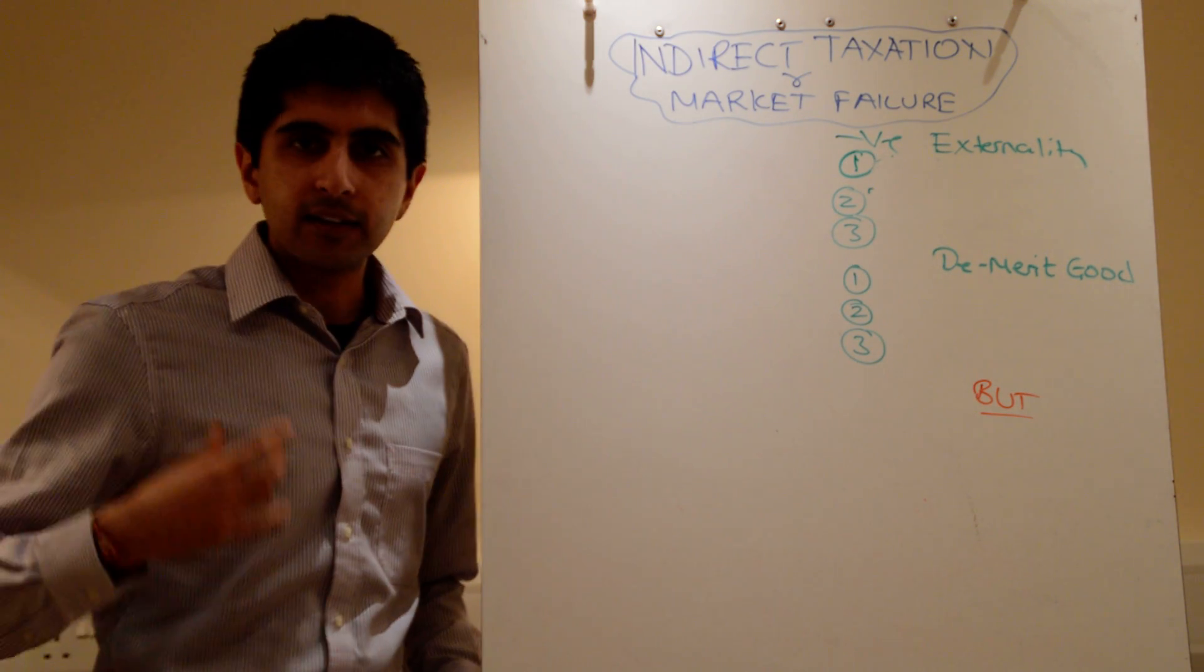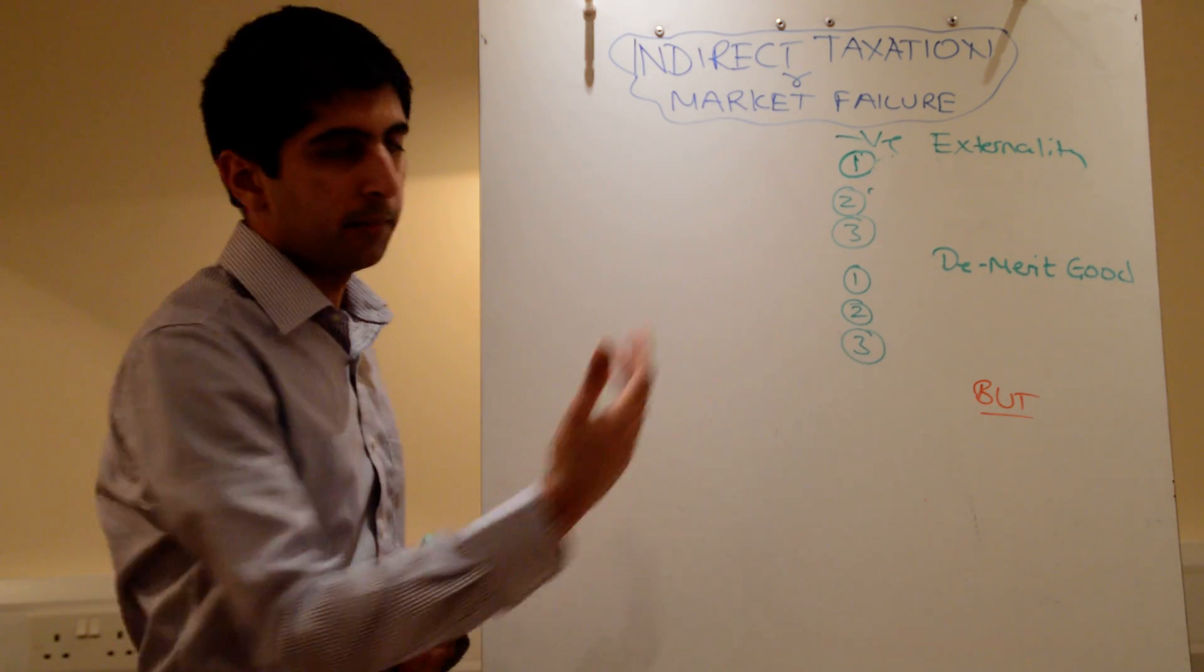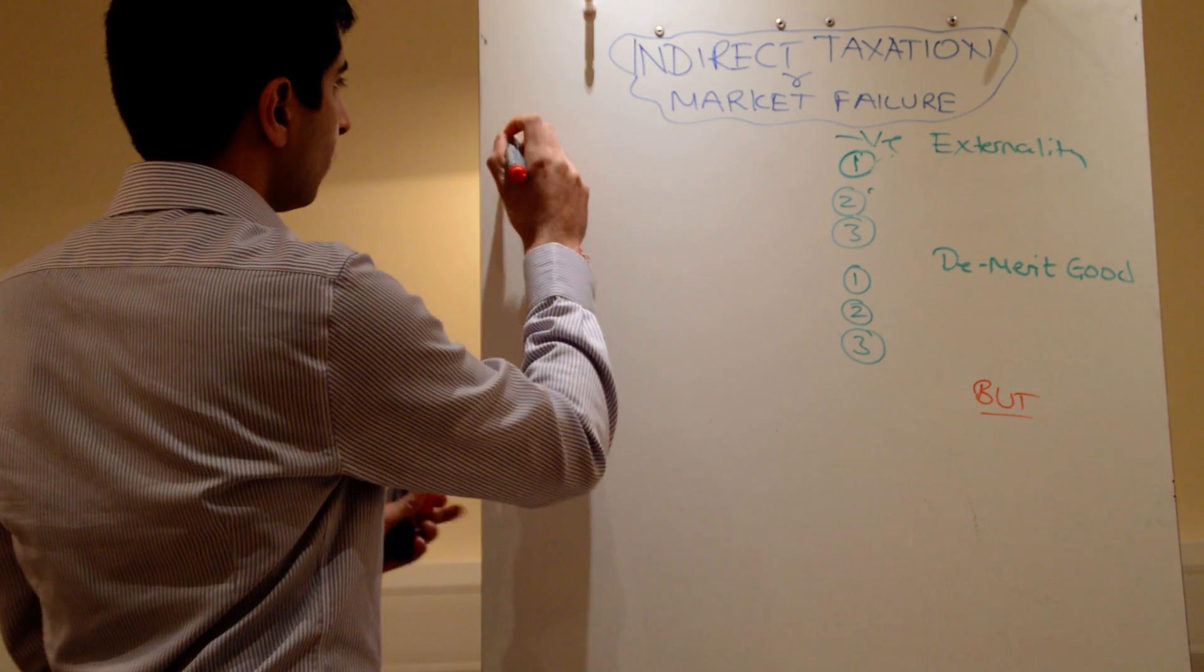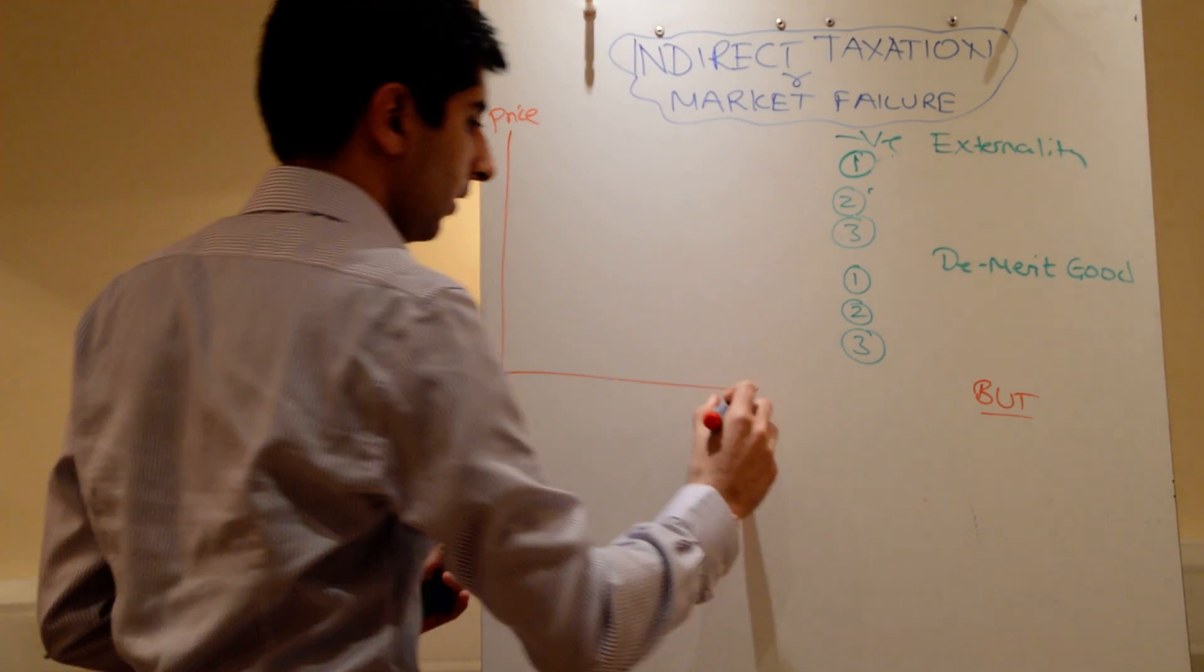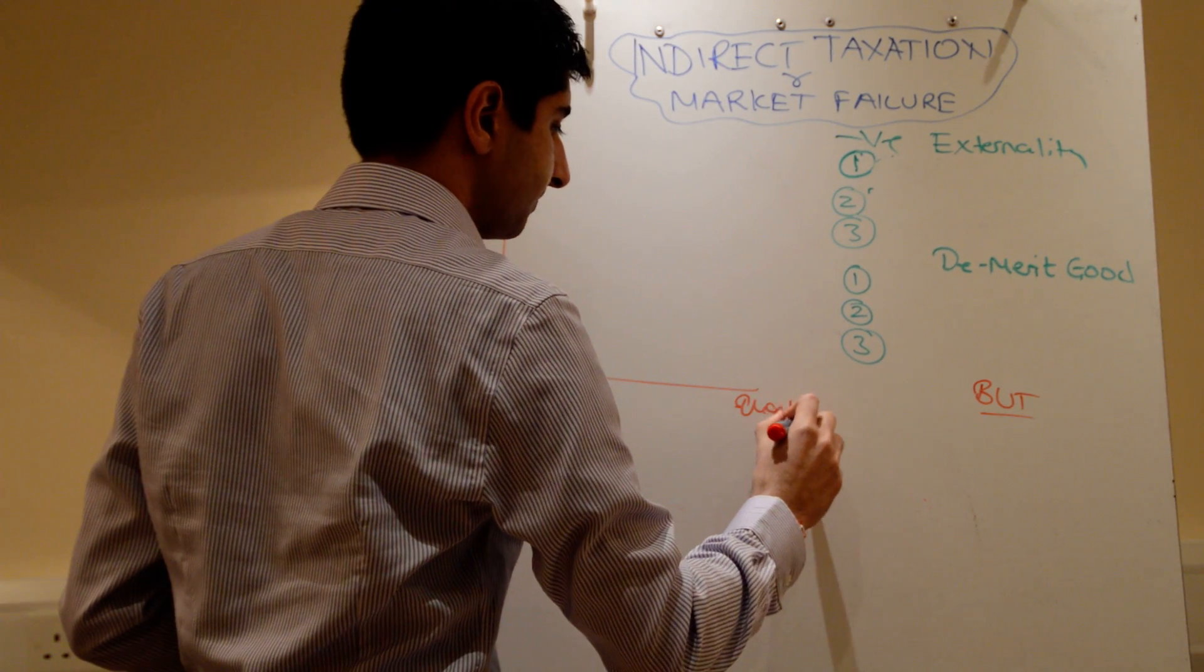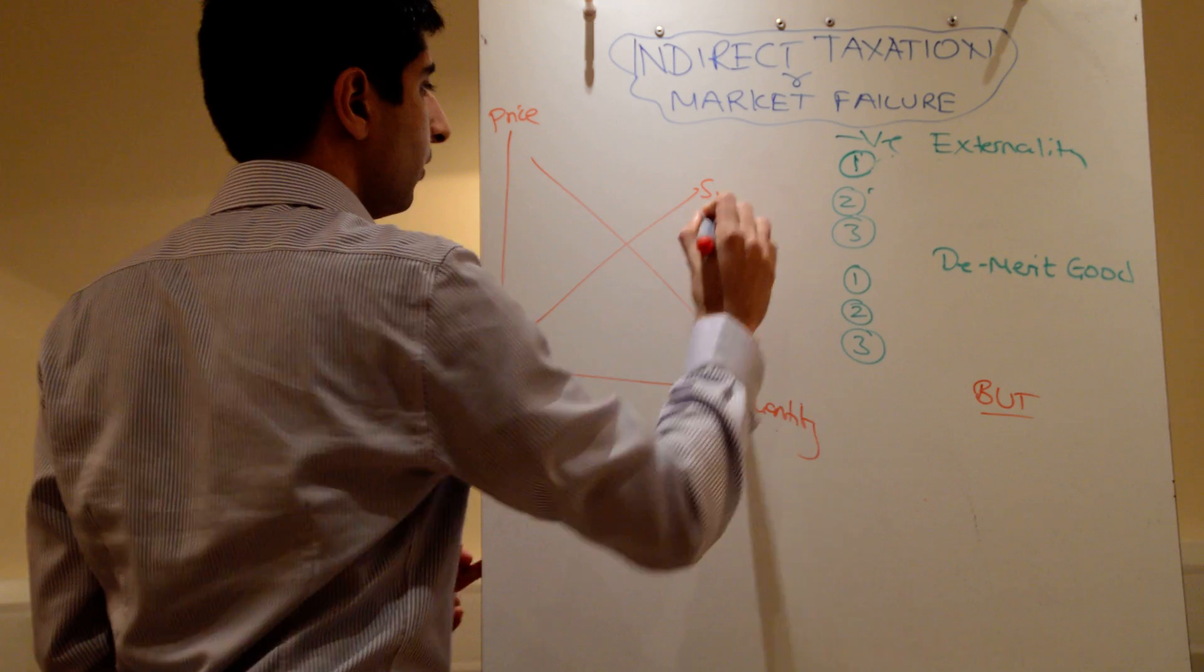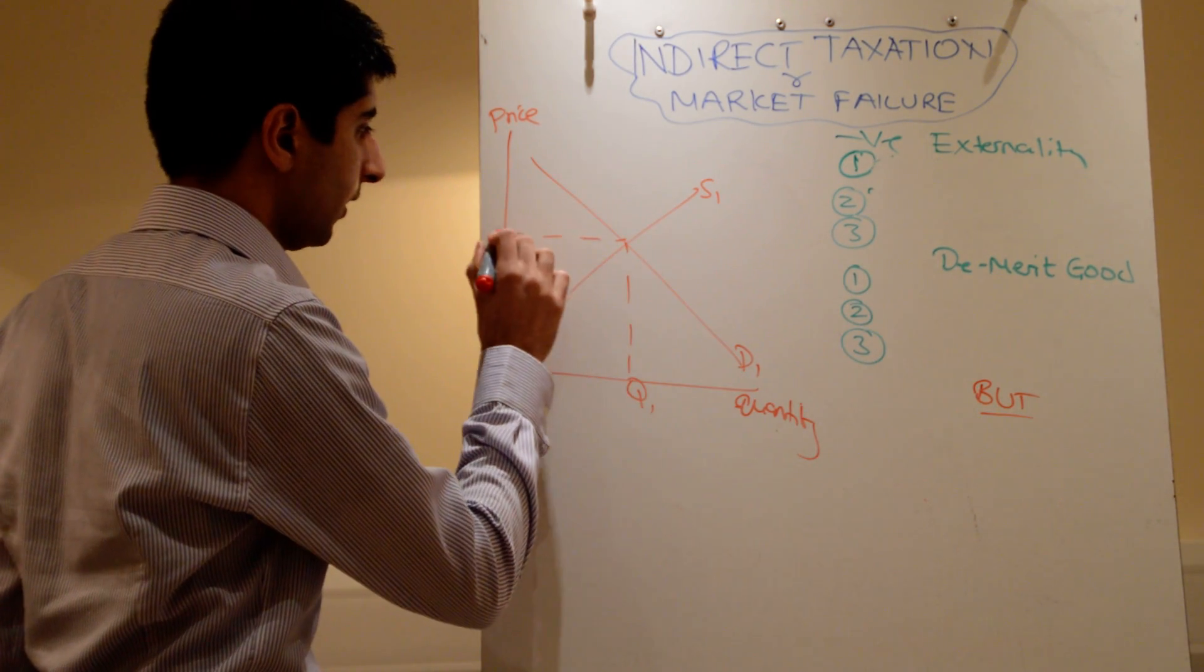We're going to look here at unit taxes to solve negative externalities and demerit goods market failures. So how do they work? To show how they work, let's draw a very simple demand and supply diagram. We've got price and quantity, and we have a demand curve and a supply curve. We know equilibrium price and quantity is where the curves intersect.